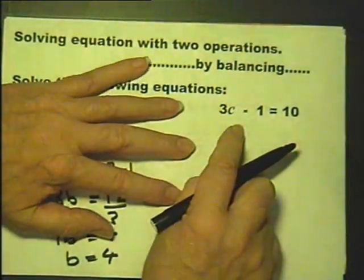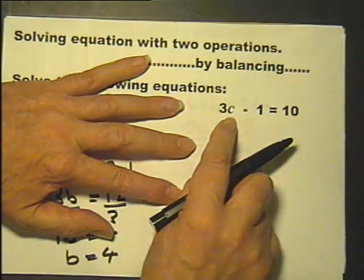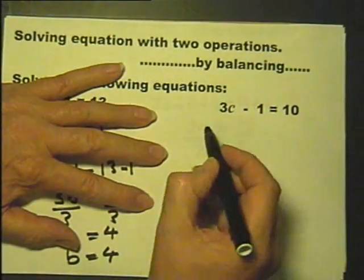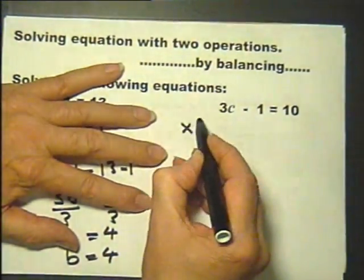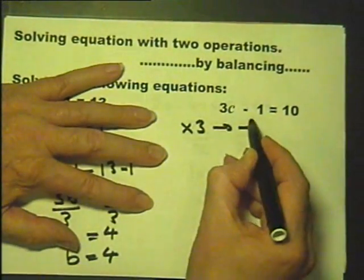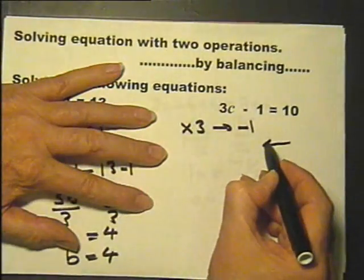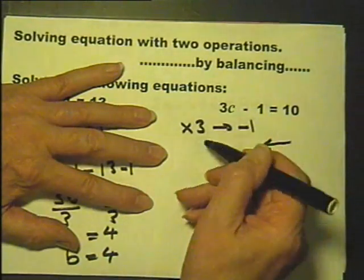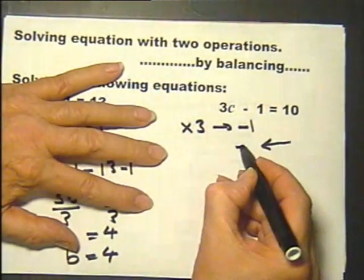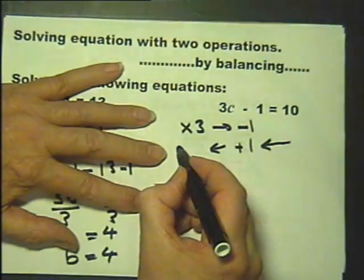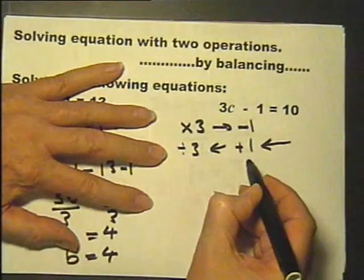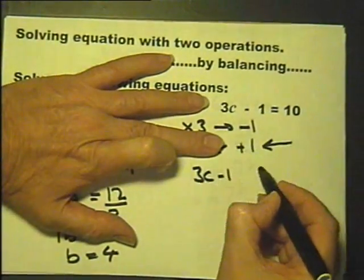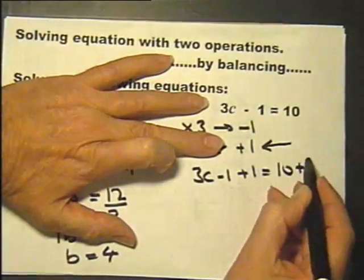We'll finish on this but we will return to this because it does need a lot of practice. Let's read this, it reads as 3c minus 1 and that means multiply by 3 and then subtract 1. The inverse is to do the inverses and do it in the opposite order so instead of subtract I add 1, instead of multiply by 3 I divide by 3. So I look at the equation and I do this to both sides, I add 1 to that side and I add 1 to that side.